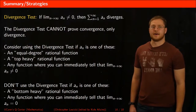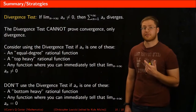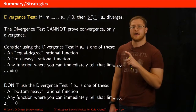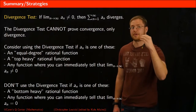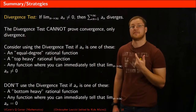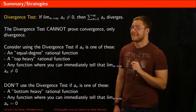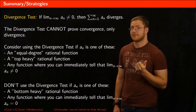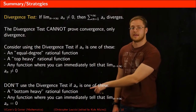Let's summarize the key ideas. The divergence test says: if the limit as n goes to infinity of a_n is not equal to zero, then the series of a_n diverges. The divergence test cannot be used to prove convergence, only divergence. Consider using it when you have an equal-degree rational function, a top-heavy rational function where the numerator degree exceeds the denominator, or any case where you can immediately tell the limit is not zero. Don't use it for bottom-heavy rational functions or any time the limit is clearly zero.